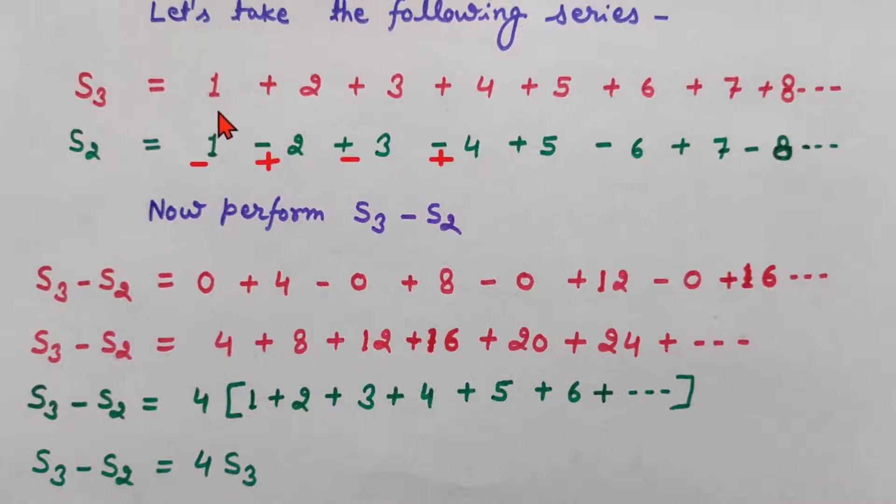So 1 minus 1 will be 0. We will subtract minus 2 from plus 2. So it will be plus 2 minus of minus 2. So 2 plus 2 is 4. And this is plus 3 minus 3. It will be 0. And plus 4 plus 4 will be 8. Plus 5 and minus 5 will be 0. And plus 6 plus 6 is 12. Plus 7 minus 7 is 0 again. And here it is again 16.